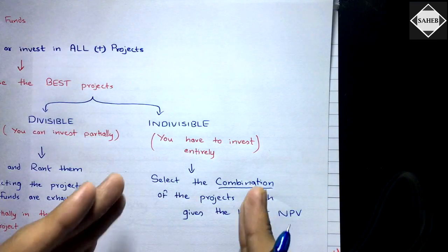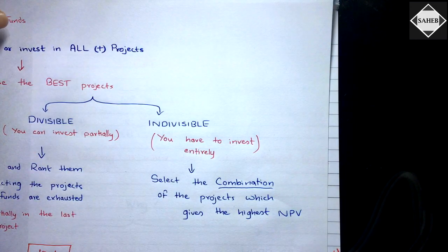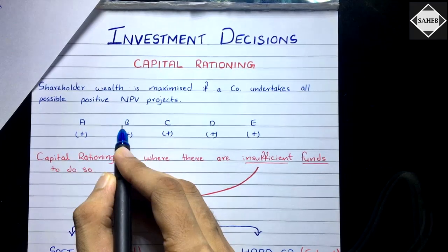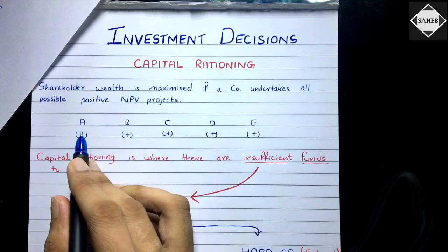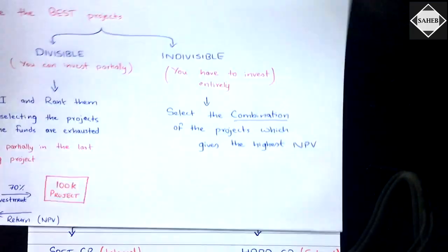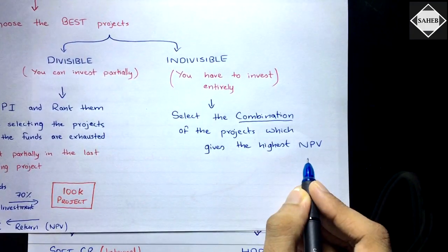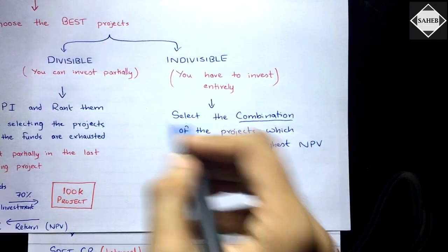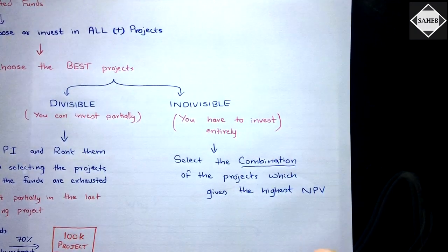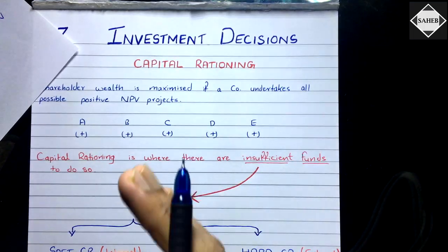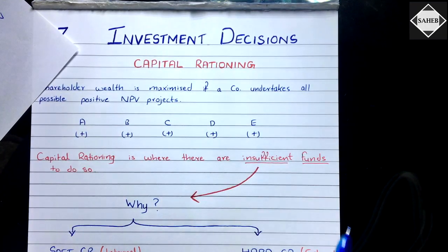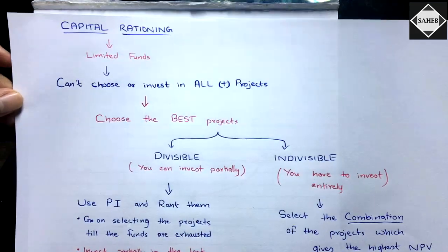For indivisible projects, you must invest entirely or not at all, so you cannot invest partially. Instead, select a combination of projects whose total cost does not exceed your budget. For example, with 20 million available, you might try combination A+B+C costing 5+10+5 = 20 million, or combination B+C+D. The best combination is the one that gives the highest total net present value, staying within the budget limit.